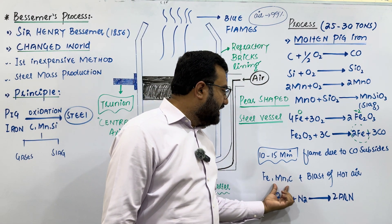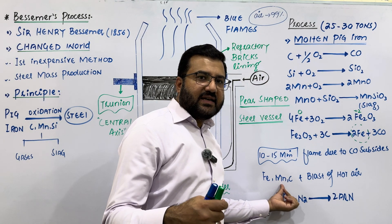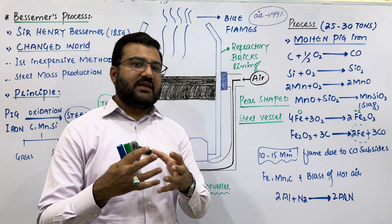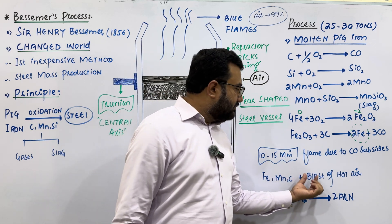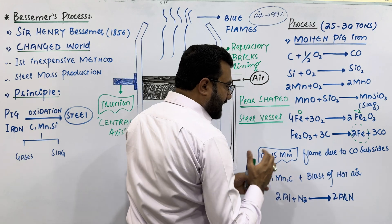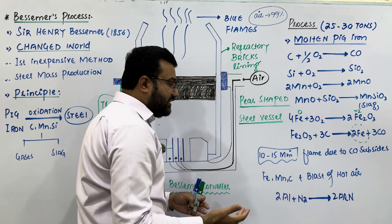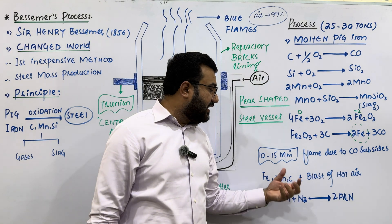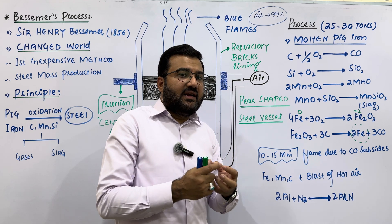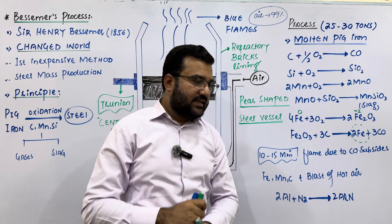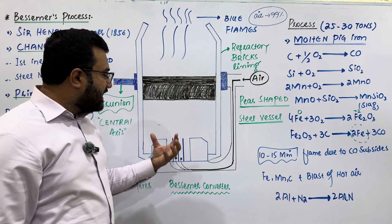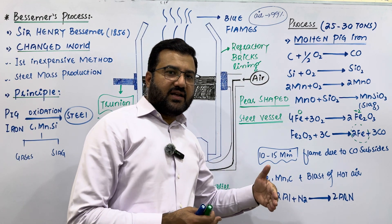Once this stage is achieved, an already-measured quantity of ferro-manganese is introduced into the steel. The manganese improves tensile strength and makes the steel harder; the carbon improves the carbon content of the steel. A blast of hot air is also introduced into the furnace so that the steel and ferro-manganese mix properly. Ferro-manganese is added until the desired carbon percentage in the steel is achieved.